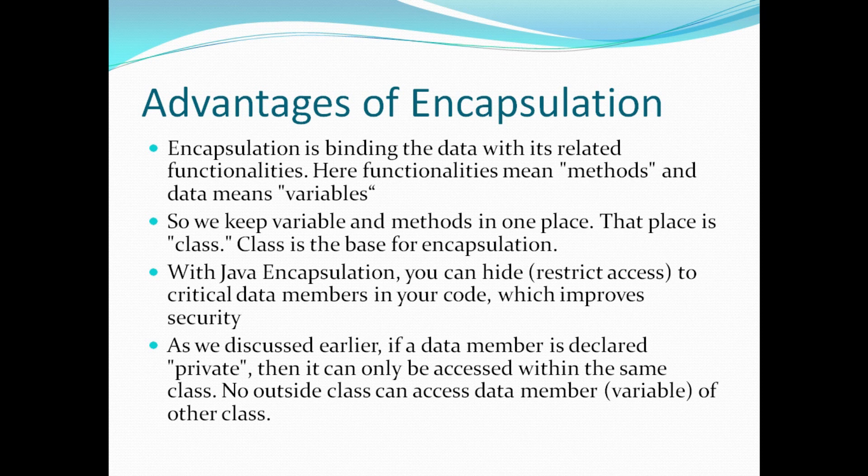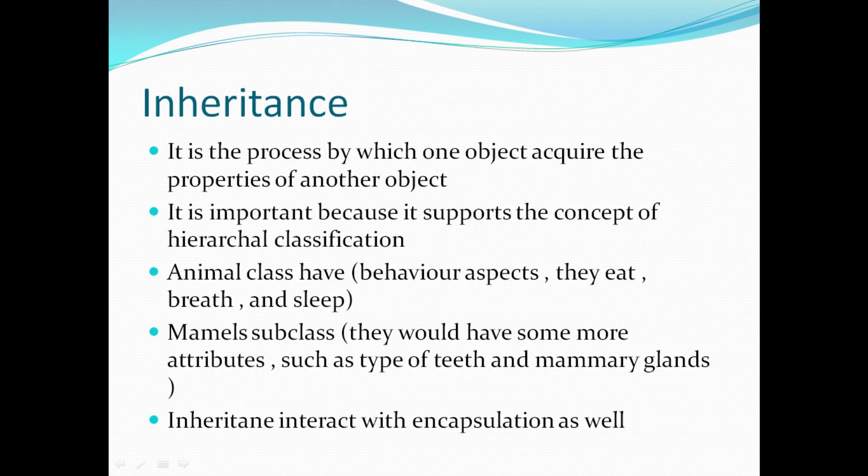In the next topic, we will discuss the differences between private, public, and protected through Java code. Now moving to the next basic principle — inheritance. Inheritance is the process by which one object acquires the properties of another object. It is important because it supports the concept of hierarchical classification. For example, if we have an animal class with functions like eat, breathe, and sleep, and a mammals class inherited from the animal class, then mammals is the subclass.